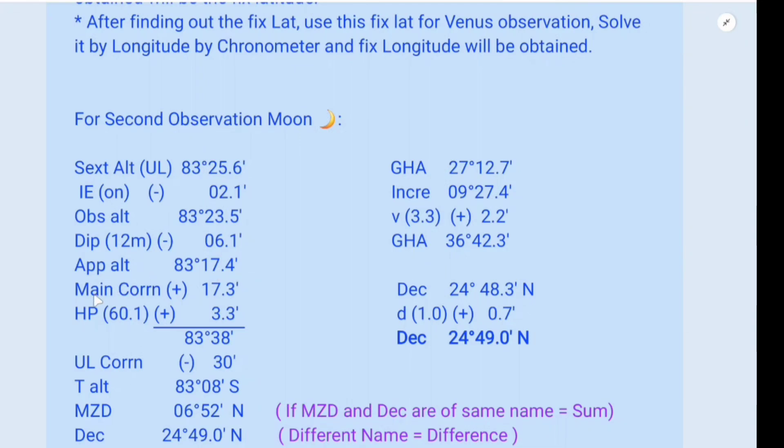So for the main correction, you look into the Almanac on the last page, altitude correction of the Moon. Upper altitude is 83 degrees 17.4, and the corresponding main correction is 17.3. And in the same column down below look for the upper column, and for 60.1, that is HP 60.1 is 3.3. If you add all together you get 83 degrees 38 minutes. And then you have to subtract upper limb correction that is 30 minutes. Then you get true altitude as 83 degrees 08 minutes south.